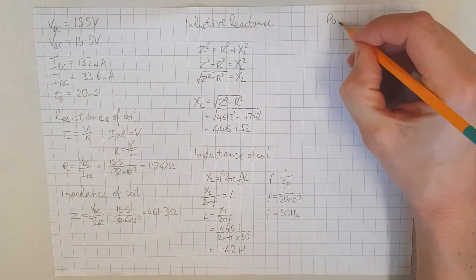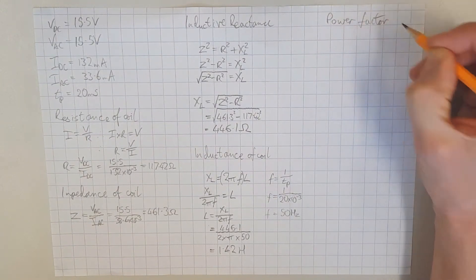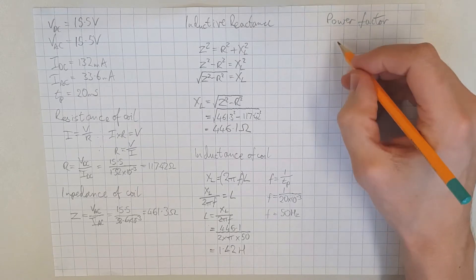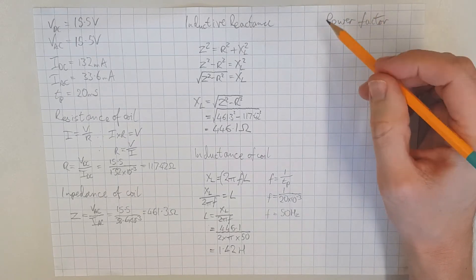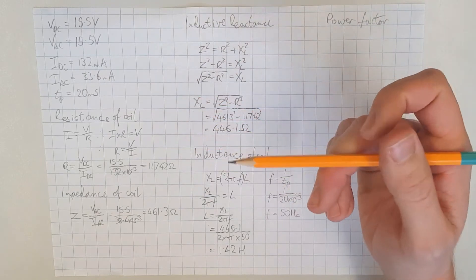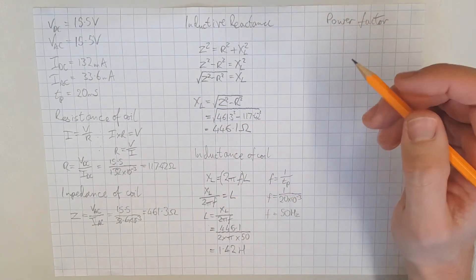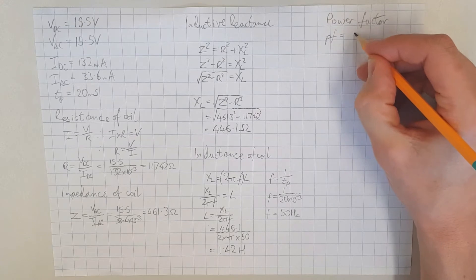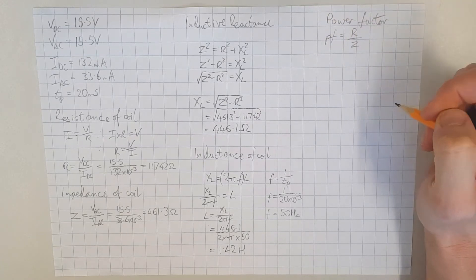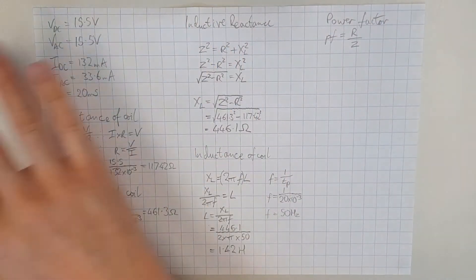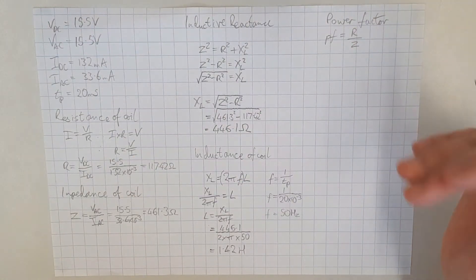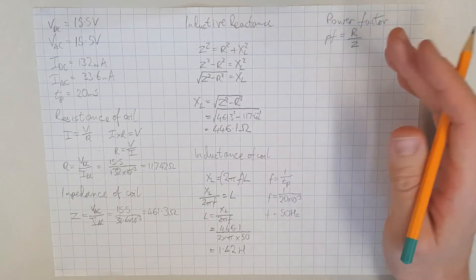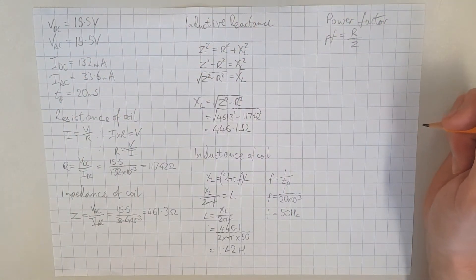The next thing we're going to do is to try and calculate the power factor. The power factor of a circuit is very easy to find as long as you know two of the values relating to the circuit. Because we haven't broken the AC voltage down into its resistive and inductive voltages, but we do know the resistance and the impedance, we can use this formula: the power factor is equal to R over Z. If any of this looks unfamiliar, please go back and watch my AC theory playlist, because this is the application of lots of previous information.